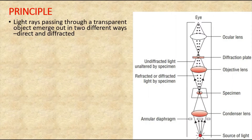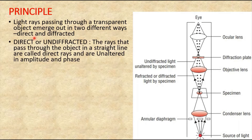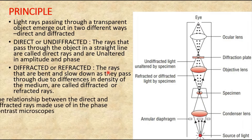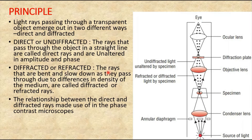Light rays passing through a transparent object emerge in two different ways: direct and diffracted. Direct rays pass straight through the object. Diffracted rays are bent and slowed down as they pass through, due to differences in the density of the medium. The relationship between these direct and diffracted rays is what is made use of in the phase contrast microscope.